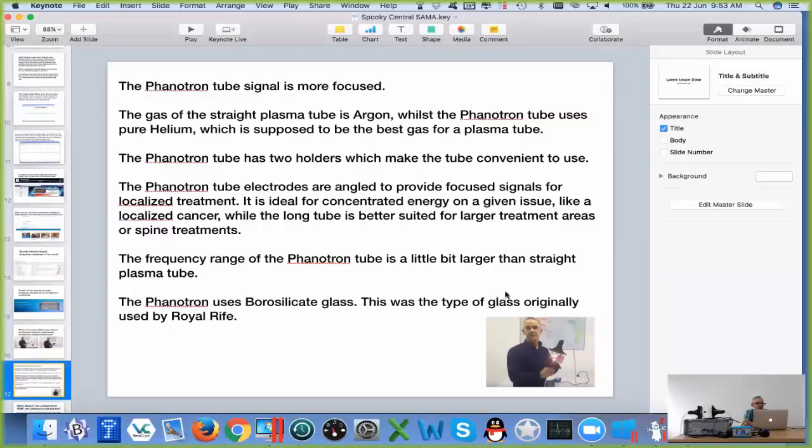The Phenatron tube electrodes: it's got one electrode that's angled and one that's straight. The angled electrode deflects the plasma and projects it outwards, so it becomes more like a broadcaster in one area rather than a broad broadcaster in all areas such as the straight tube.